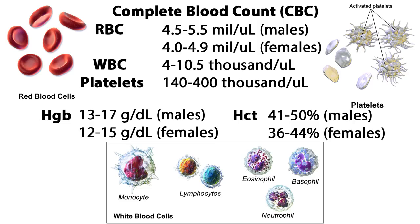The normal range of RBCs for males is 4.5 to 5.5 million per microliter; the range for females is 4.0 to 4.9. White blood cells should range between 4 to 10.5 thousand per microliter. Platelets range from 140 to 400 thousand per microliter. The normal range for hemoglobin is 13 to 17 grams per deciliter for males, and 12 to 15 grams per deciliter for females.